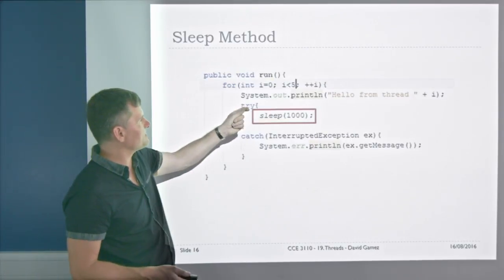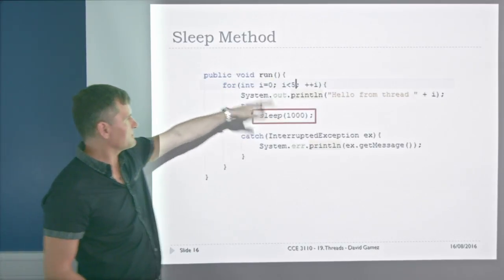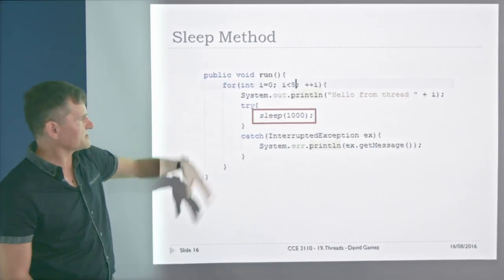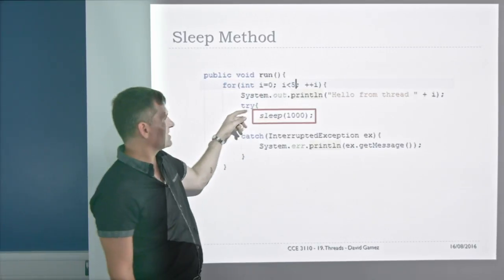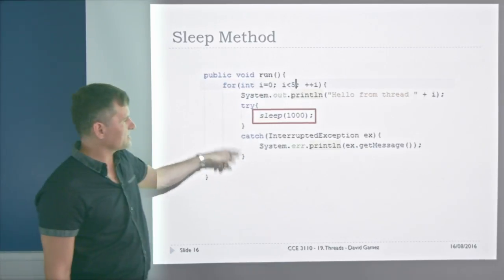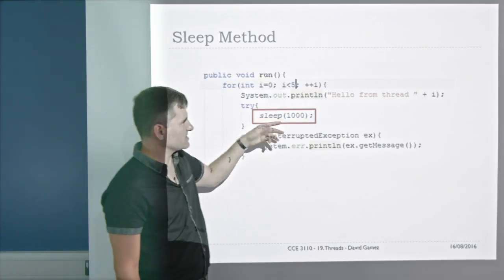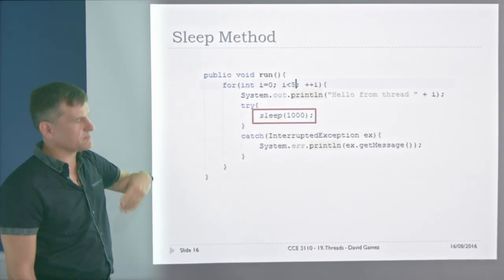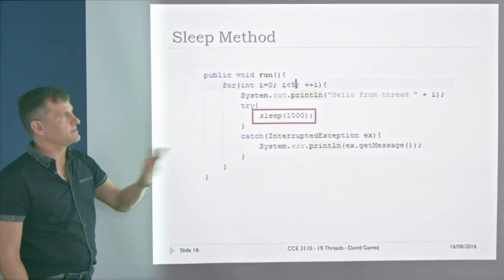Here's a simple example: a for loop that runs five times, prints something, and calls sleep inside a try-catch. It prints something, goes to sleep, wakes up, prints something, goes to sleep, wakes up.